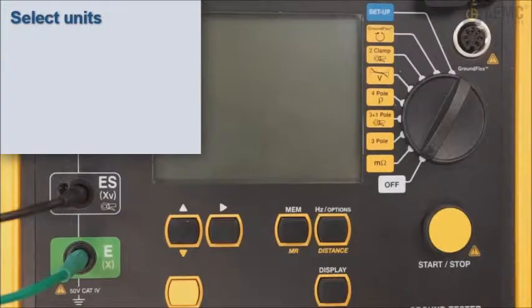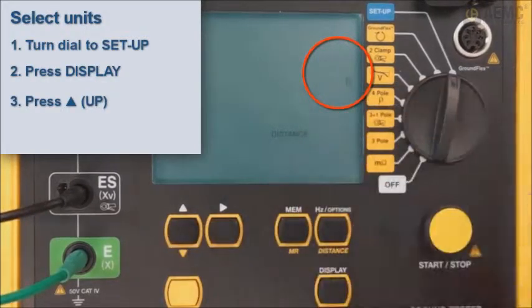We start by ensuring the instrument is configured for the correct units of measure. Turn the instrument's dial to the Setup setting. Then press the Display button. The units of measure, either meters or feet, appears blinking on the screen. Pressing the Up button toggles between these two options. In our example, we're using feet, so if this is set to meters, press the Up button to change the setting.